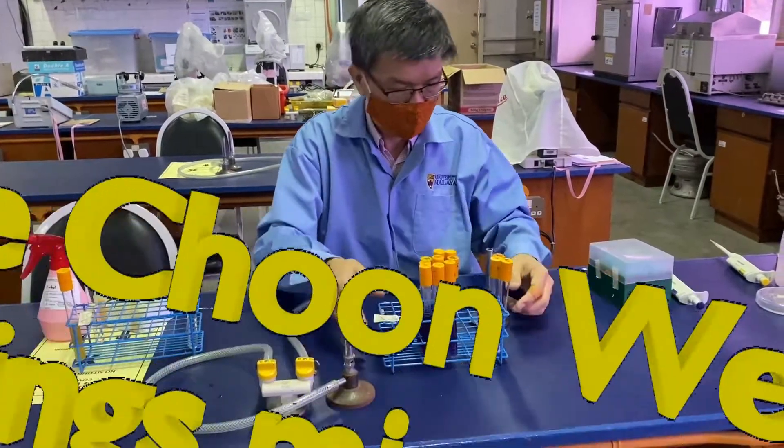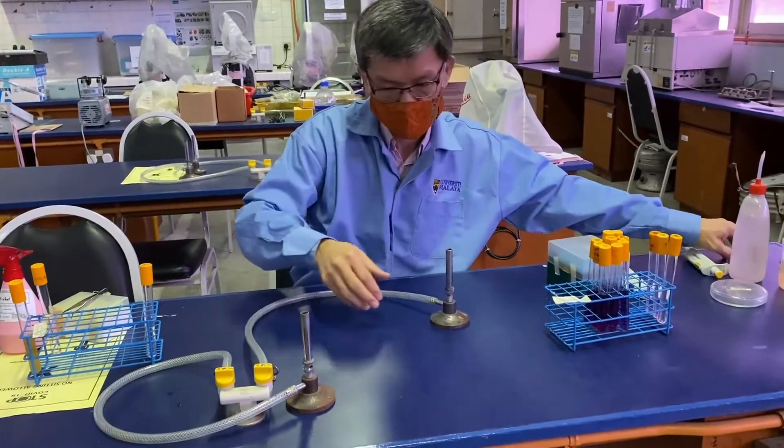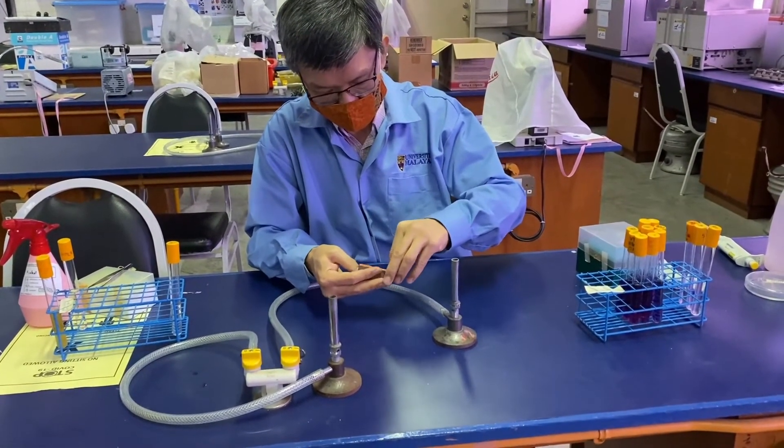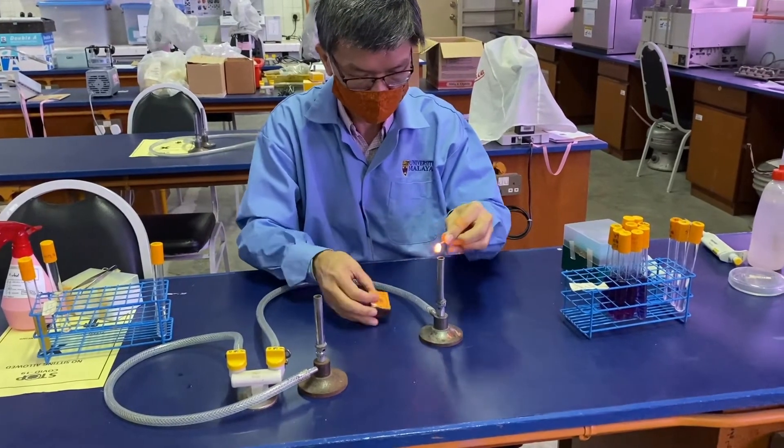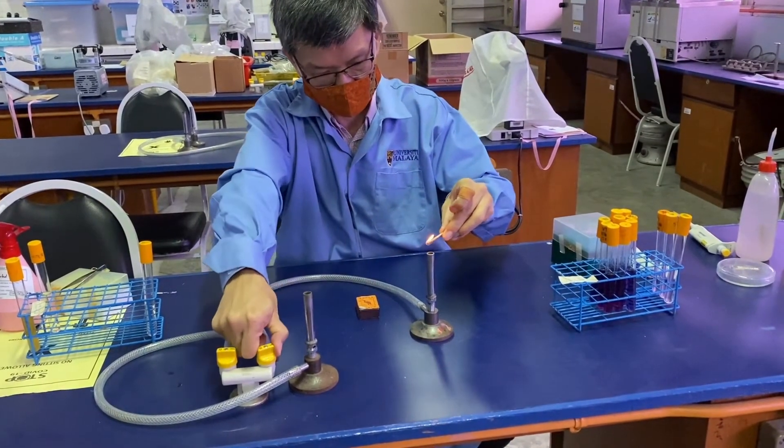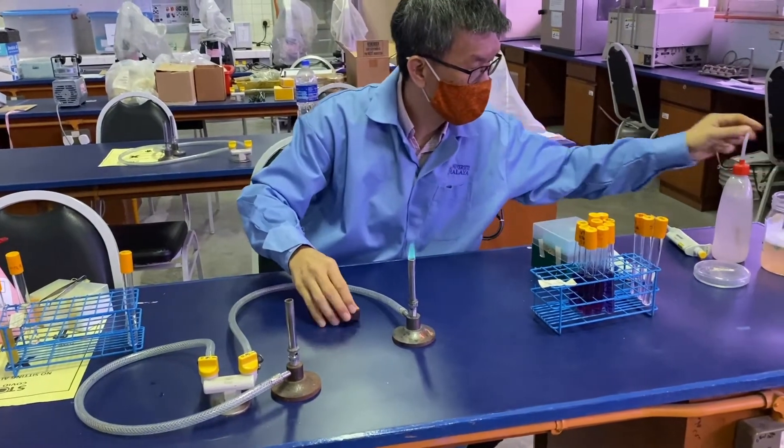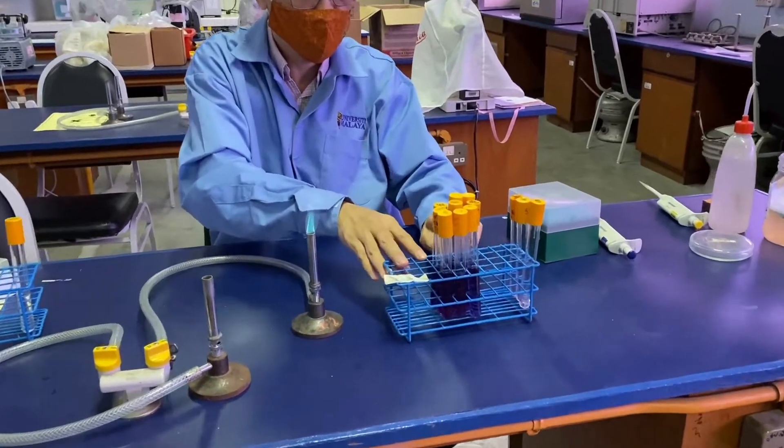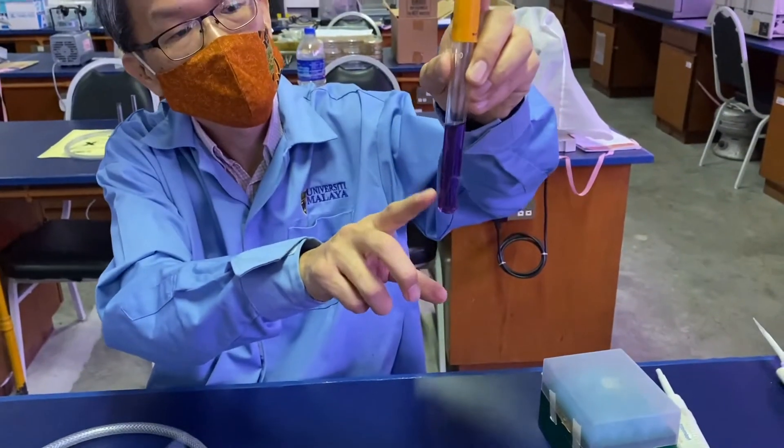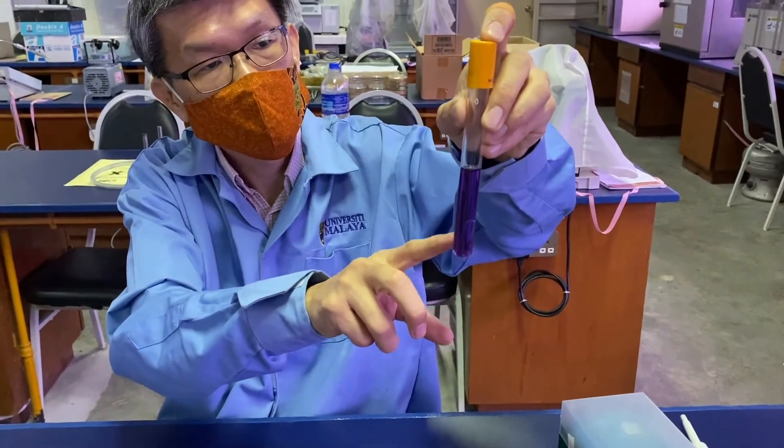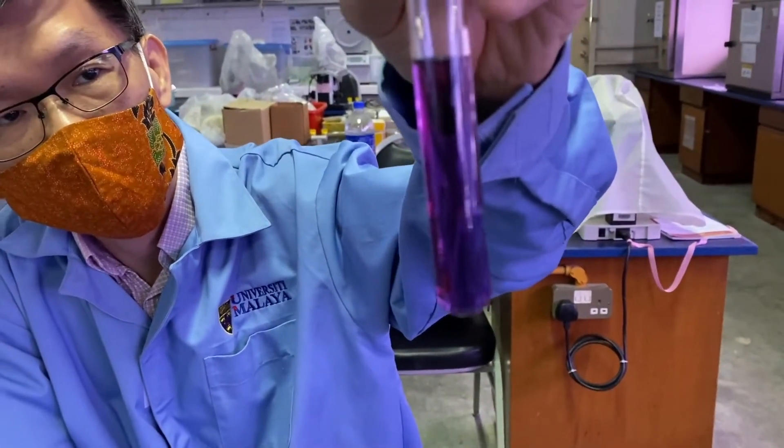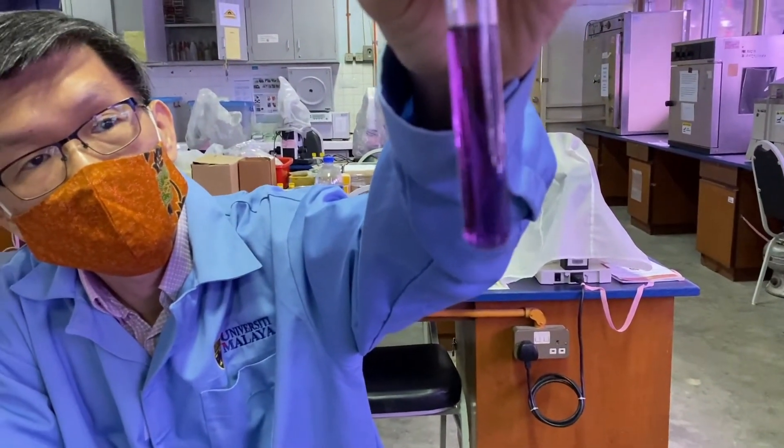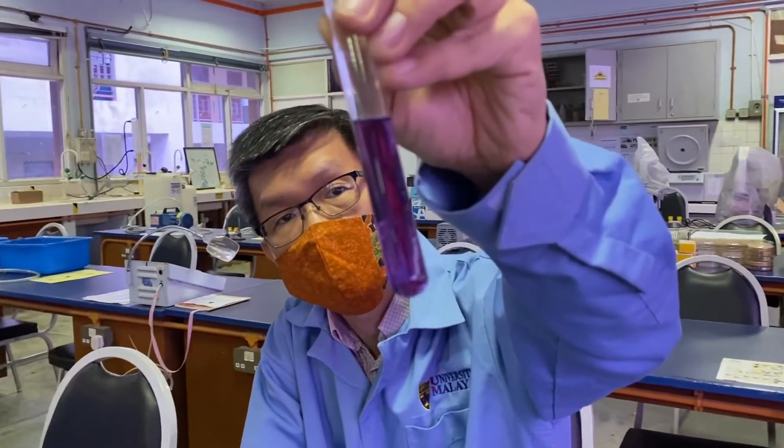This is how we prepare the Most Probable Number technique. We have to work around the flame to ensure aseptic conditions. We are working with McConkey purple broth with a Durham tube inside, and we are preparing a three-tube MPN.